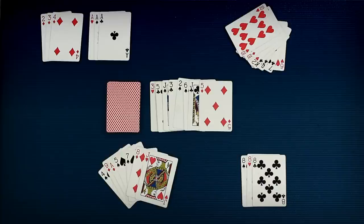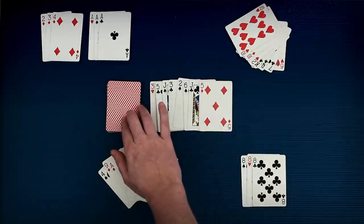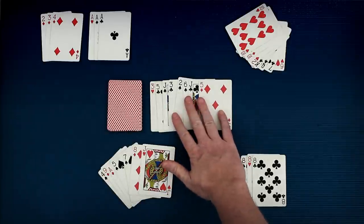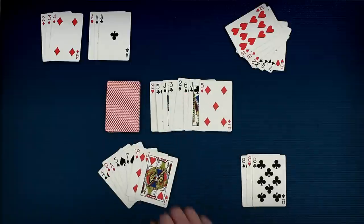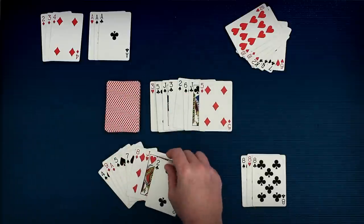First you must draw a card. You can choose to draw from the stock pile or the discard pile. If you draw from the stock pile you just take the top card and add it to your hand. Simple.